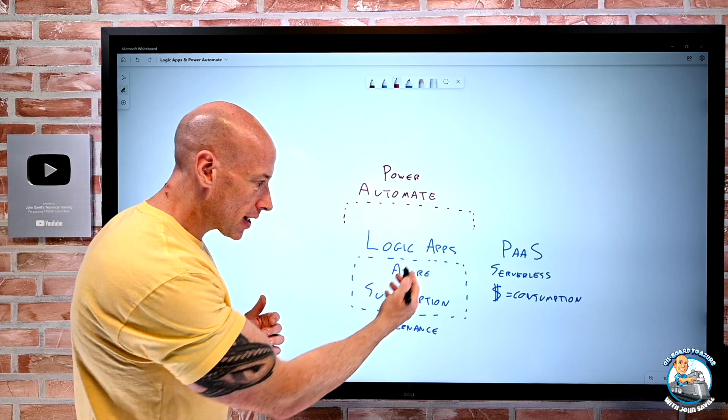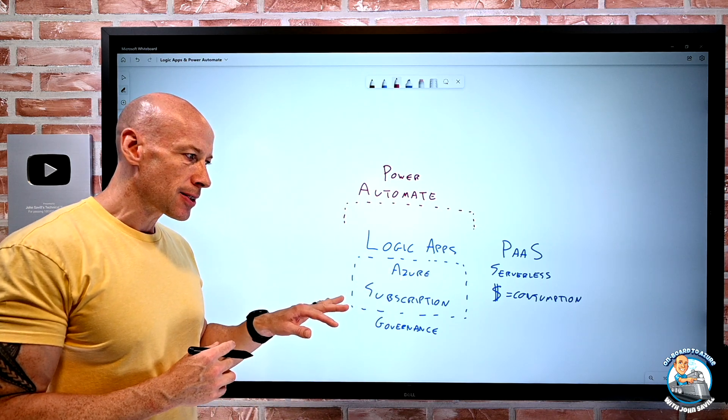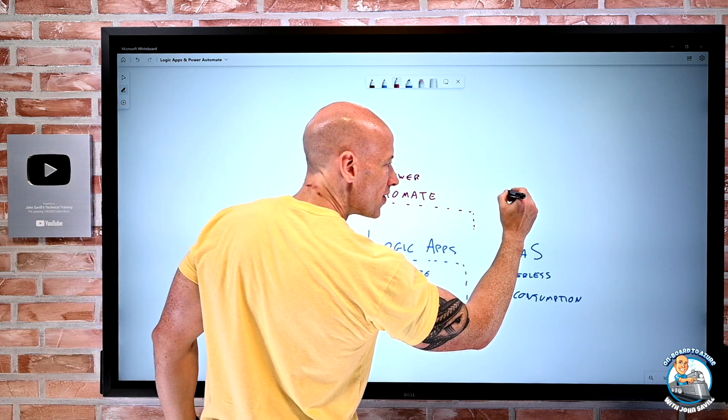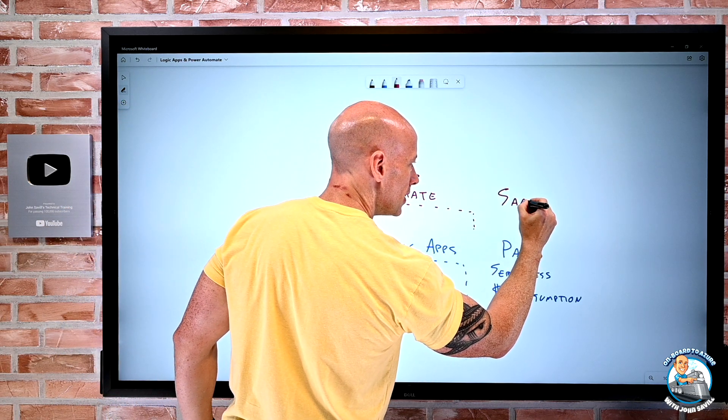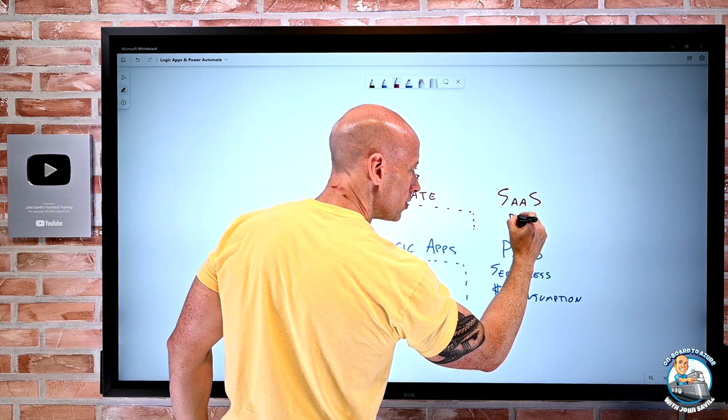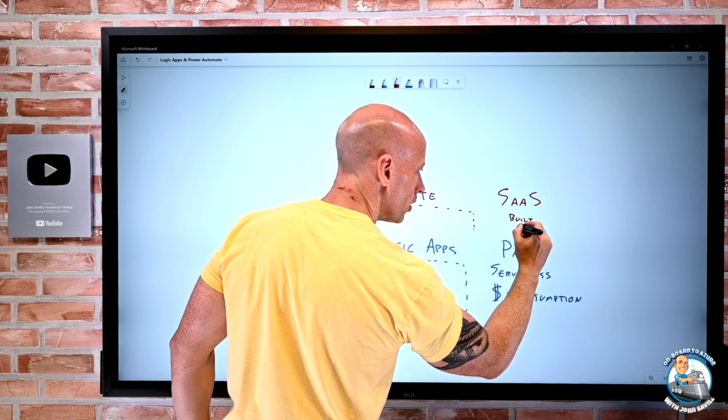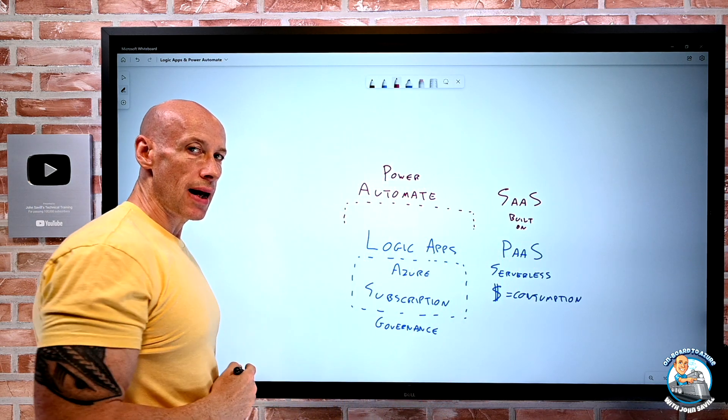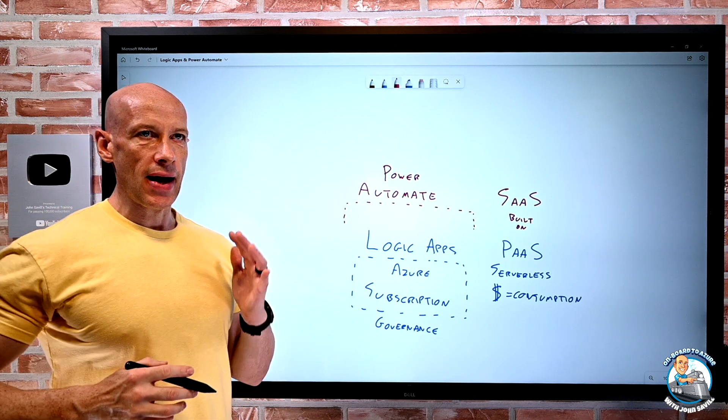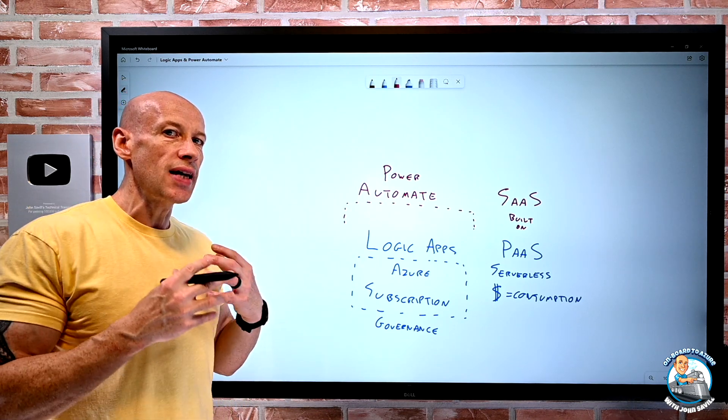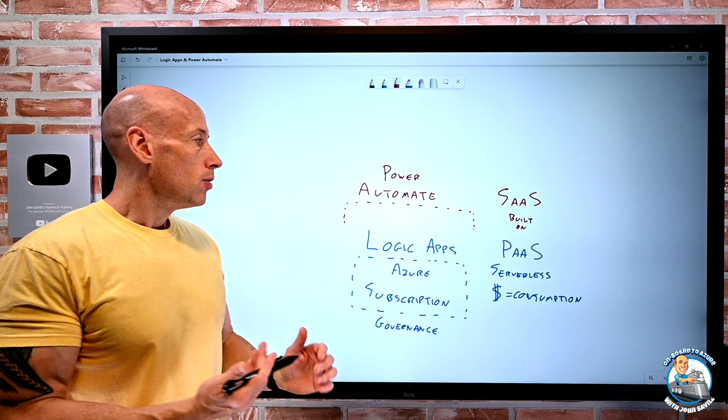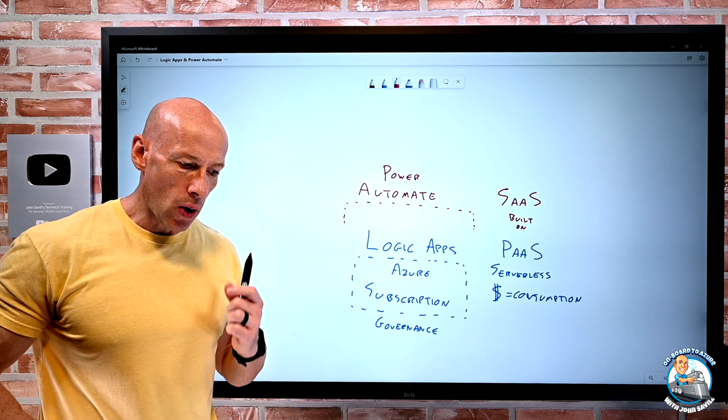It abstracts it away. So I'm not worried about, hey, the Logic App or an Azure subscription, all those governance things. Power Automate is more of a SaaS solution. It's a SaaS that is built on Logic Apps. So when I think about that, it's important to understand that if I can do something in Logic Apps, well, I'm going to be able to do that on Power Automate as well.